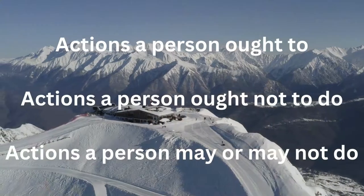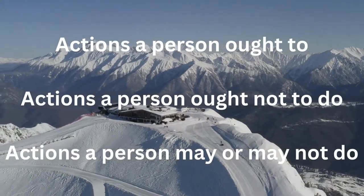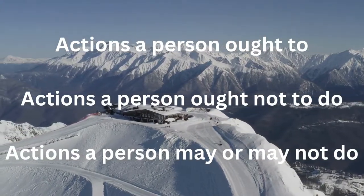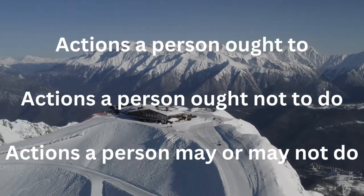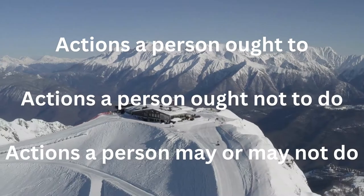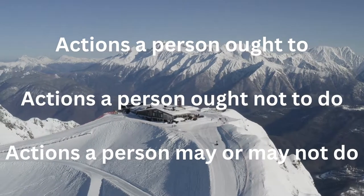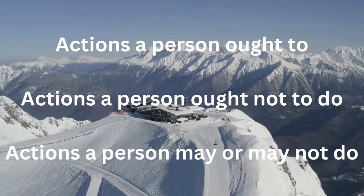Typically, people judge human action in one of three ways: actions a person ought to do, actions a person ought not to do, and actions a person may either do or not do.